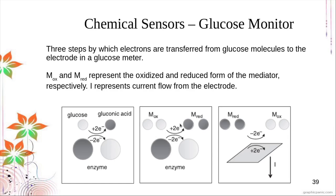The enzyme transfers the electrons to a mediator. The mediator in most systems is FADH. The mediator then passes the electrons to the sensor, which is an amperometric sensor. When the mediator passes the electron originally from glucose to the sensor, it generates a current. That current is how the sensor detects glucose — electrons flow from substrate to enzyme, enzyme to mediator, mediator to sensor.